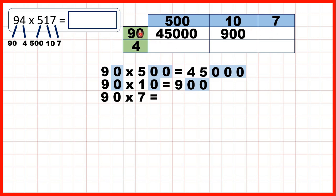Now we need 90 times 7, so that's 630 because 9 times 7 is 63, and we need one end zero.